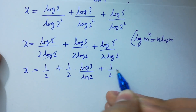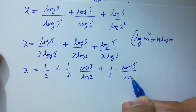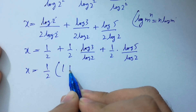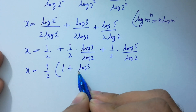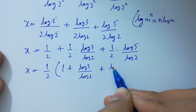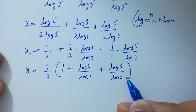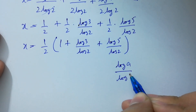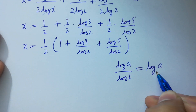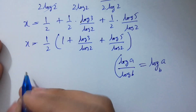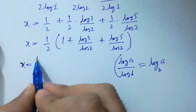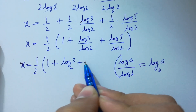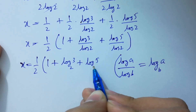So x equals 1 over 2 plus 1 over 2 times log 3 over log 2 plus 1 over 2 times log 5 over log 2. Taking 1 over 2 as common: x equals 1 over 2 times (1 plus log 3 over log 2 plus log 5 over log 2). Since log a over log b equals log a to the base b, x equals 1 over 2 times (1 plus log 3 to the base 2 plus log 5 to the base 2).